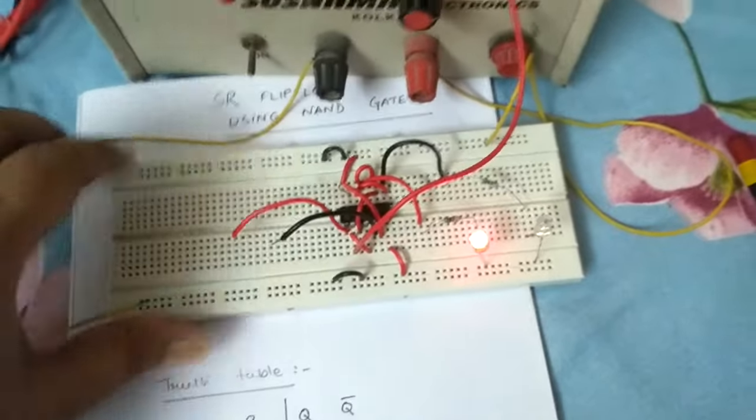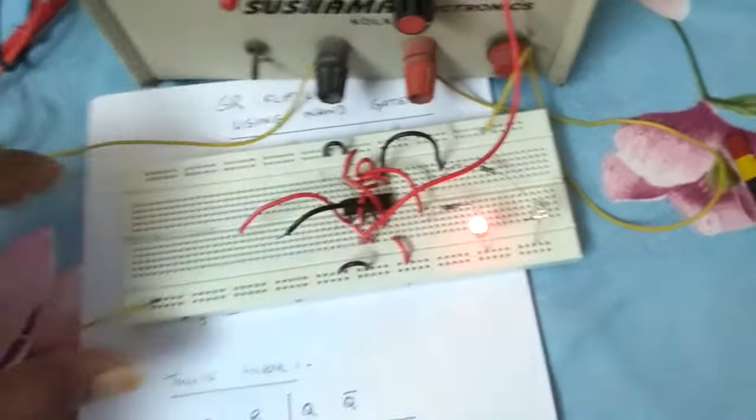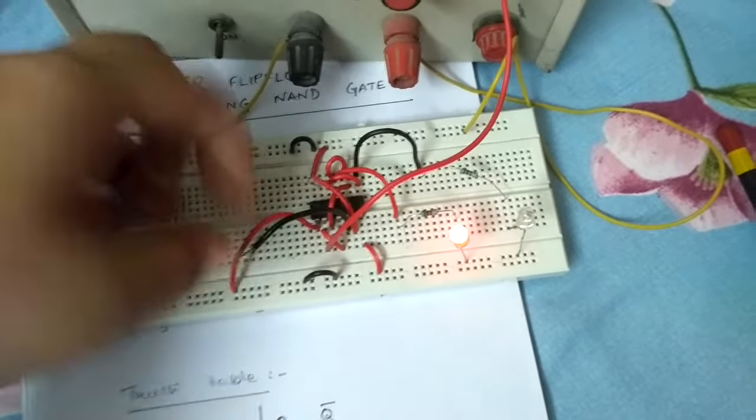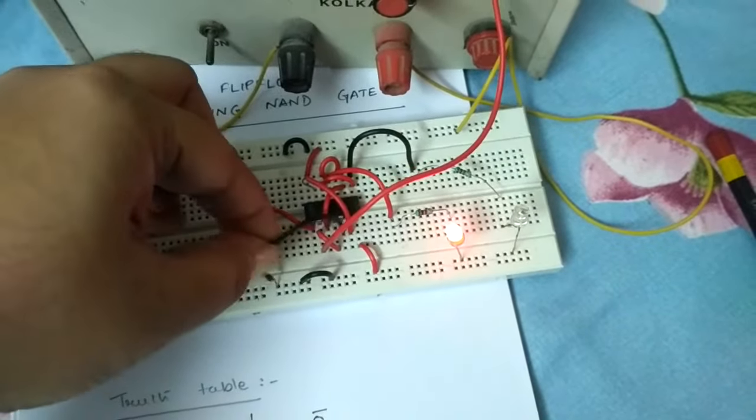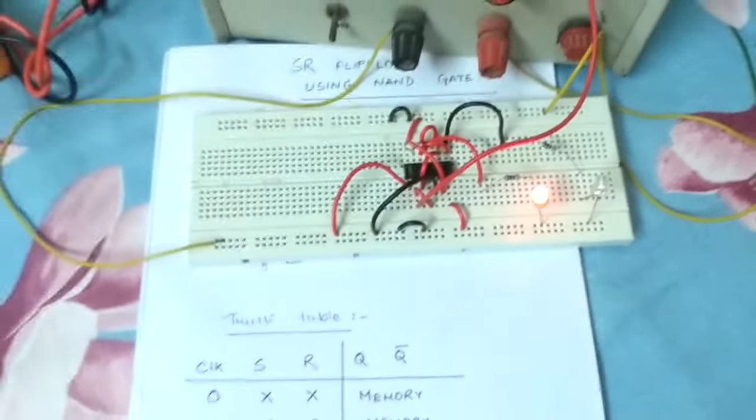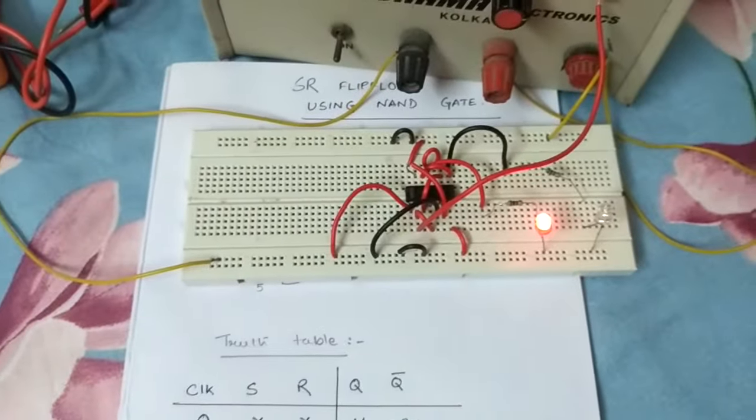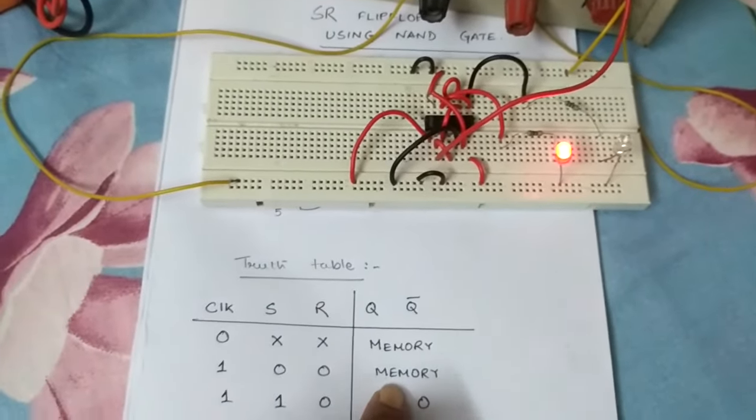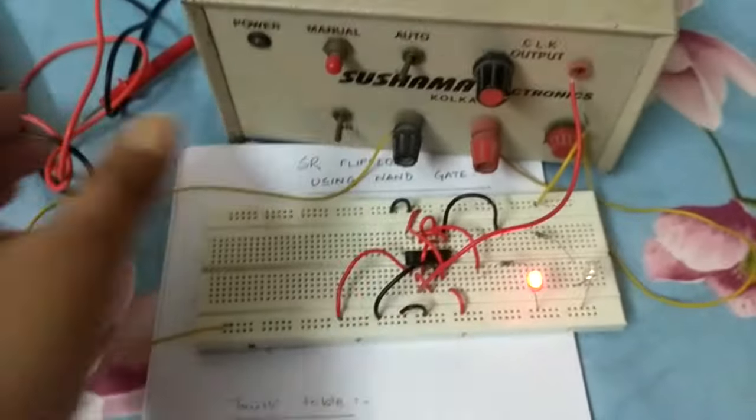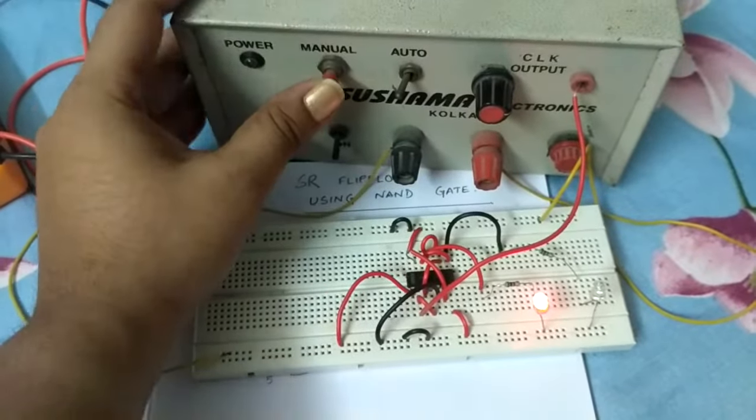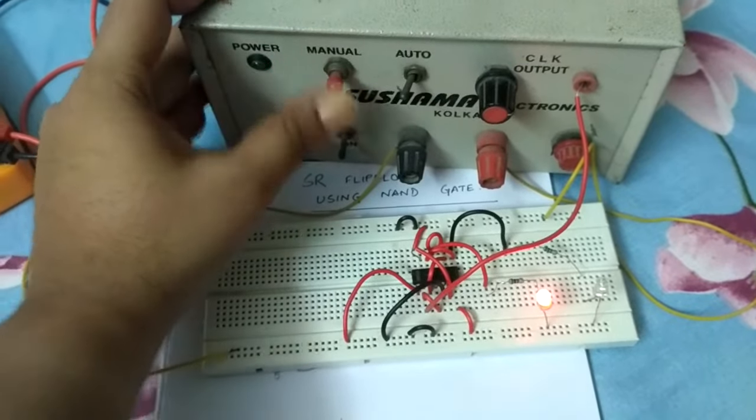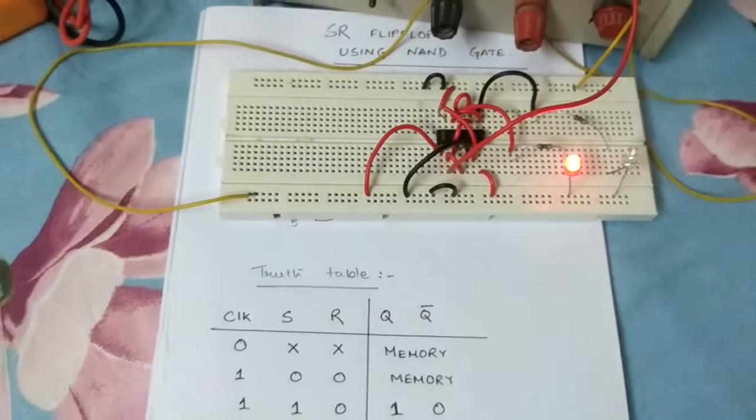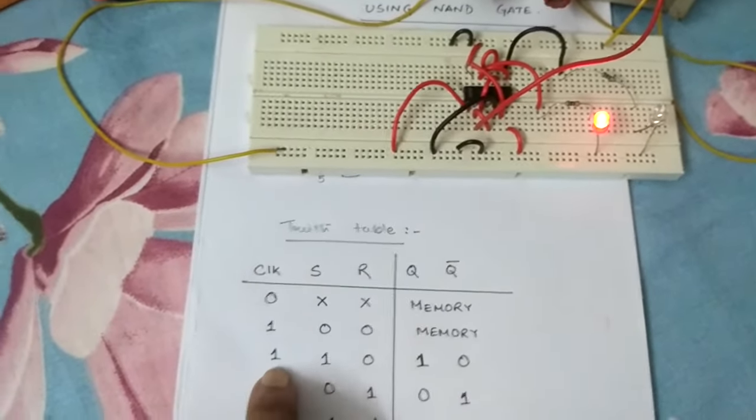Let's begin. I make this both S and R as zero zero. So I'm making S and R zero zero and I'm applying a clock pulse. So as per the truth table it should have the memory that is being shown. It doesn't change, that means the memory is retained.